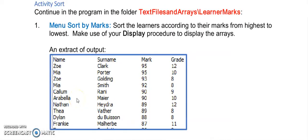And now it's your time to practice again. So go back to your program and go to the menu called sort by marks and see if you can sort these marks from highest to lowest according to the mark and display their information.